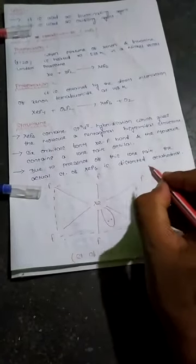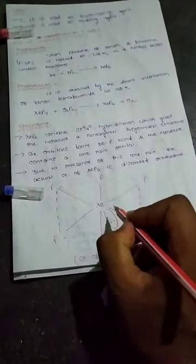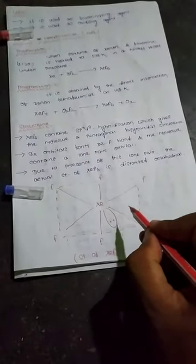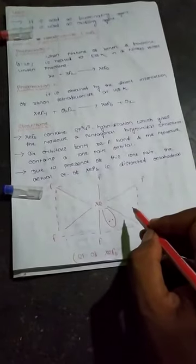Seven orbitals give the molecule a pentagonal bipyramidal structure. This is a pentagonal bipyramidal structure, but you can see this is a lone pair of electron, and the shape changes and the actual structure is distorted octahedral structure.